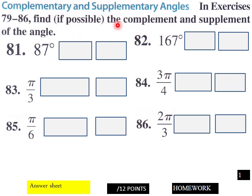Page one of your homework: find, if possible, the complement and supplement of these angles. Then for these angles in radians, find the complement and supplement as well. Put them in these response boxes there. 12 points here.